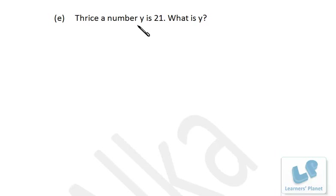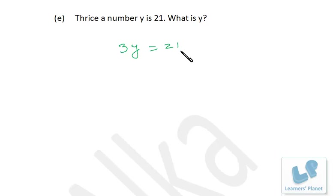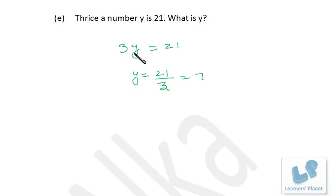Thrice a number y is 21. That means 3y equals 21. Since 3 is multiplied, we divide: y equals 21 divided by 3, which is 7. Check: 3 times 7 equals 21. The value of y equals 7 is correct.